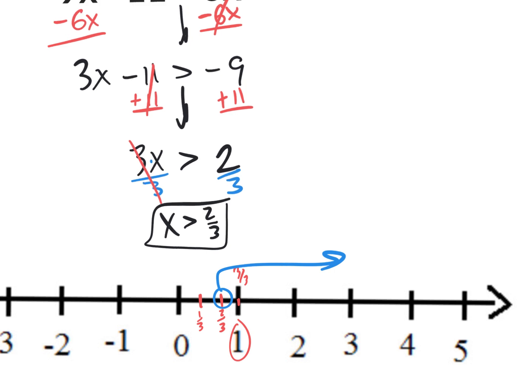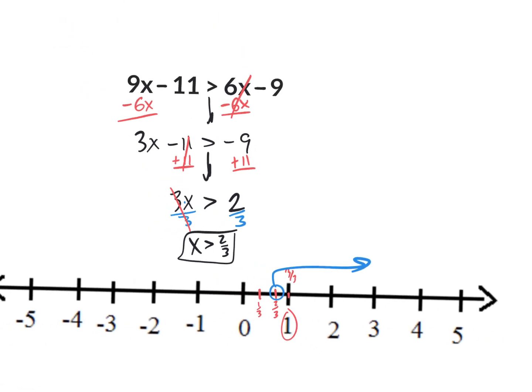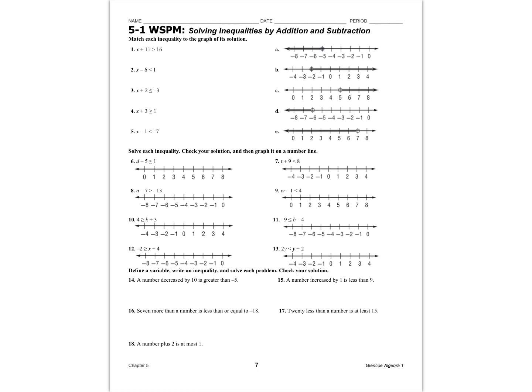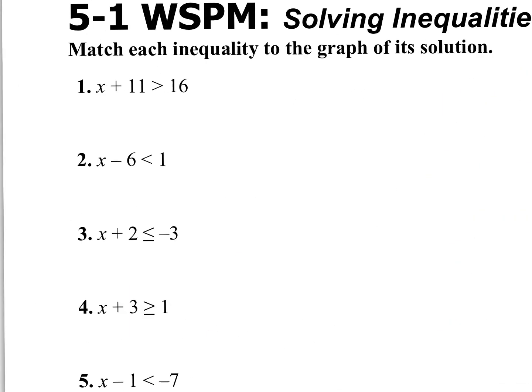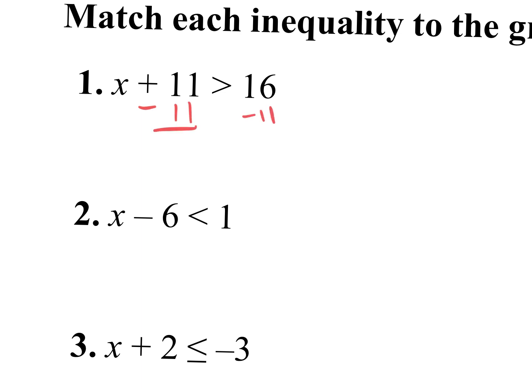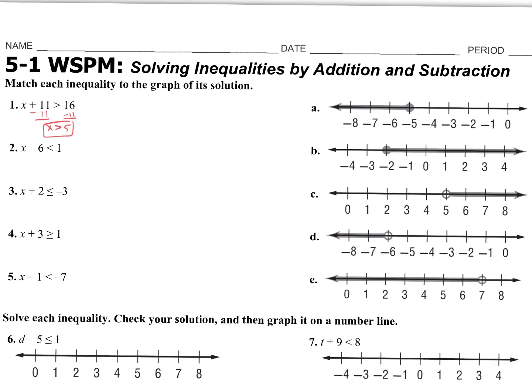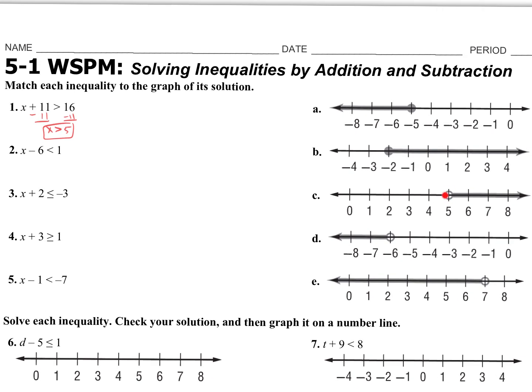If you understand that, you're good to go for these next two sections. On the first page of homework, it's all one-step inequalities. Nowhere on this first worksheet will you ever divide by a negative and have to flip the inequality symbol — 5.1 starts really basic. For example, subtract 11, get x > 5, then match it to the correct graph: open dot at 5 going to the right.